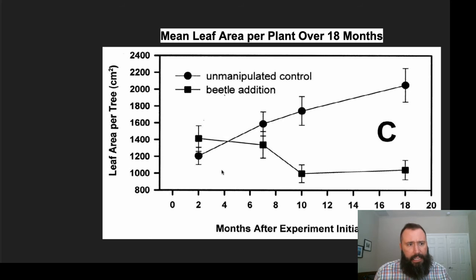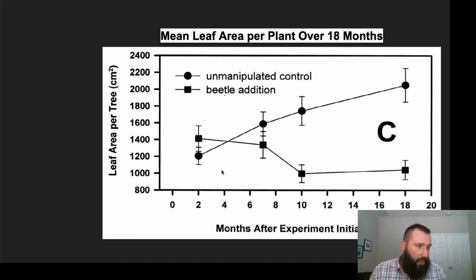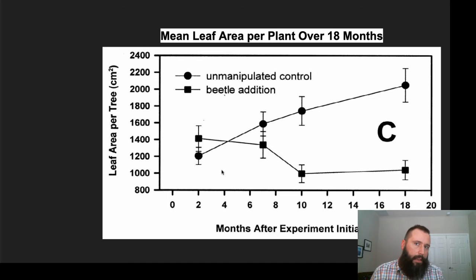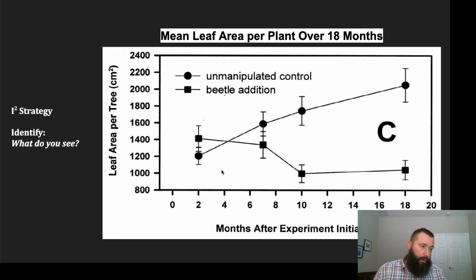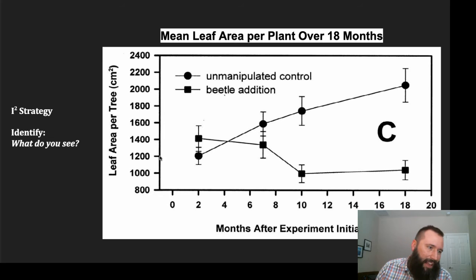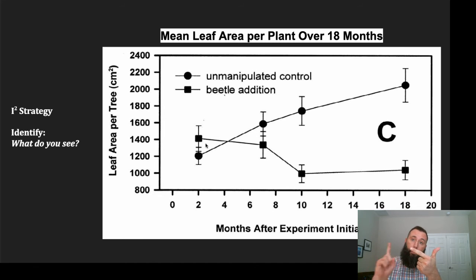Here's their data. When you see a graph like this, the first thing to do is look at the title — 'Mean leaf area per plant over 18 months' — and then look at the X and Y axes. This is the I-squared strategy. The first I is 'identify' — think about what you see. The Y axis refers to leaf area; the X axis refers to a time frame moving forward. There are two different lines: the line with circles is the results of the control group — that's the ant, the plant, and the caterpillar.